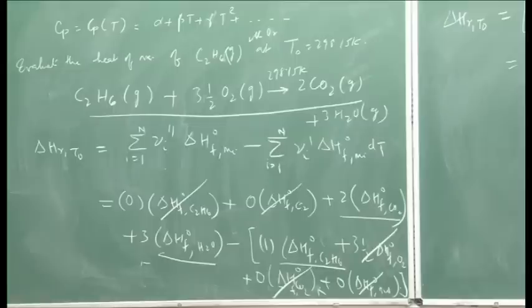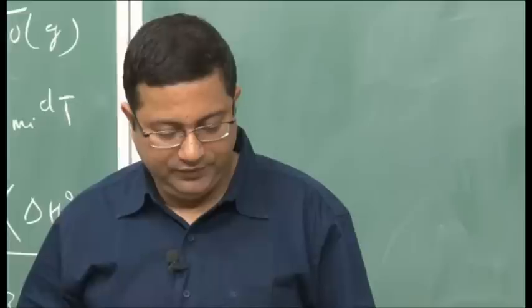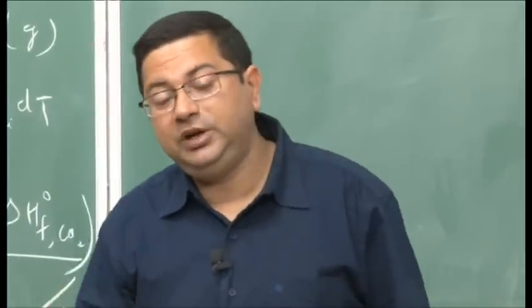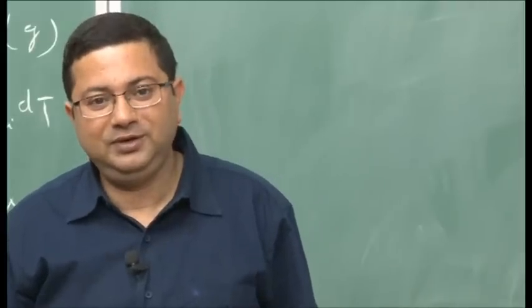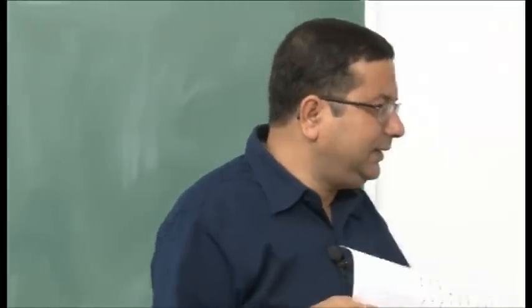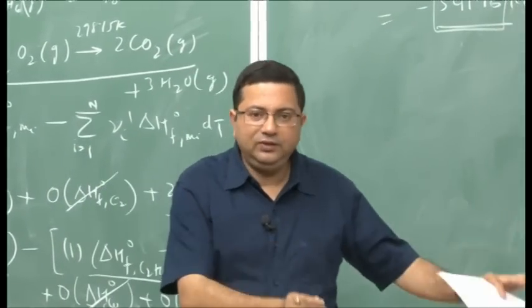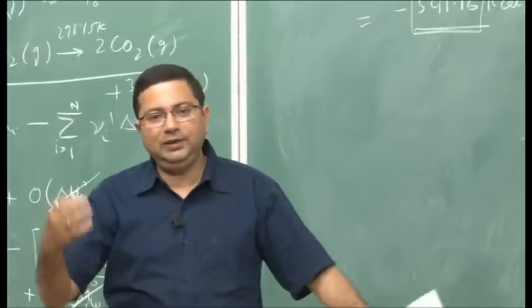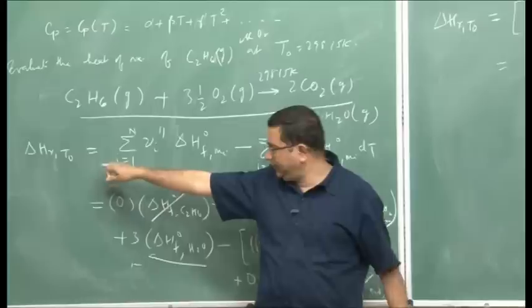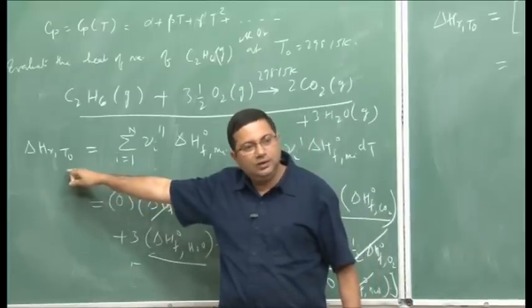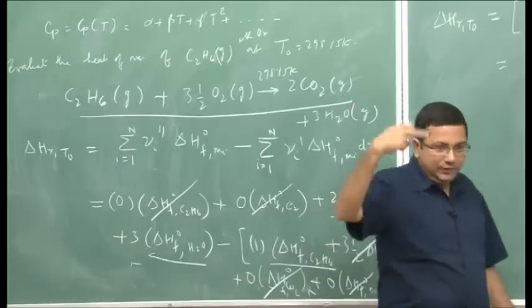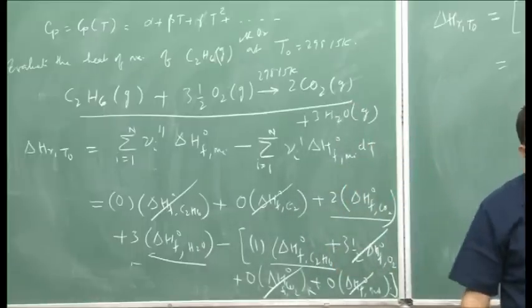Now let us look at another thing. In all our discussion so far, the reaction occurred at say standard state temperature T°, and some heat was liberated — the heat of reaction. If we know how much heat is liberated but not the temperature, we need to define the process. Considering a reaction path: reactants initially at temperature T, reaction occurs at standard temperature T°, and we want to find the final product temperature.